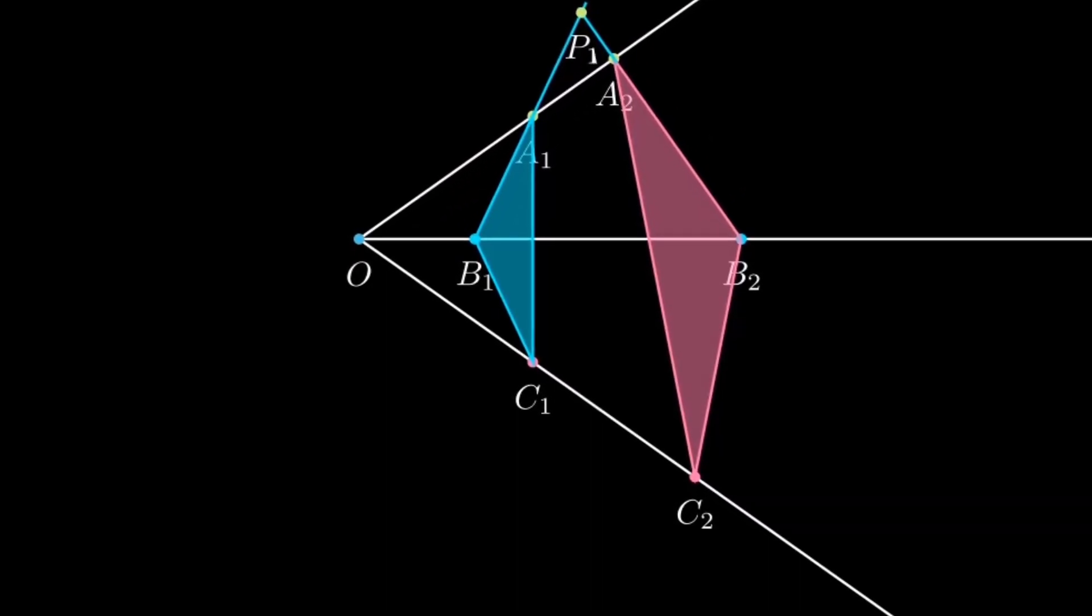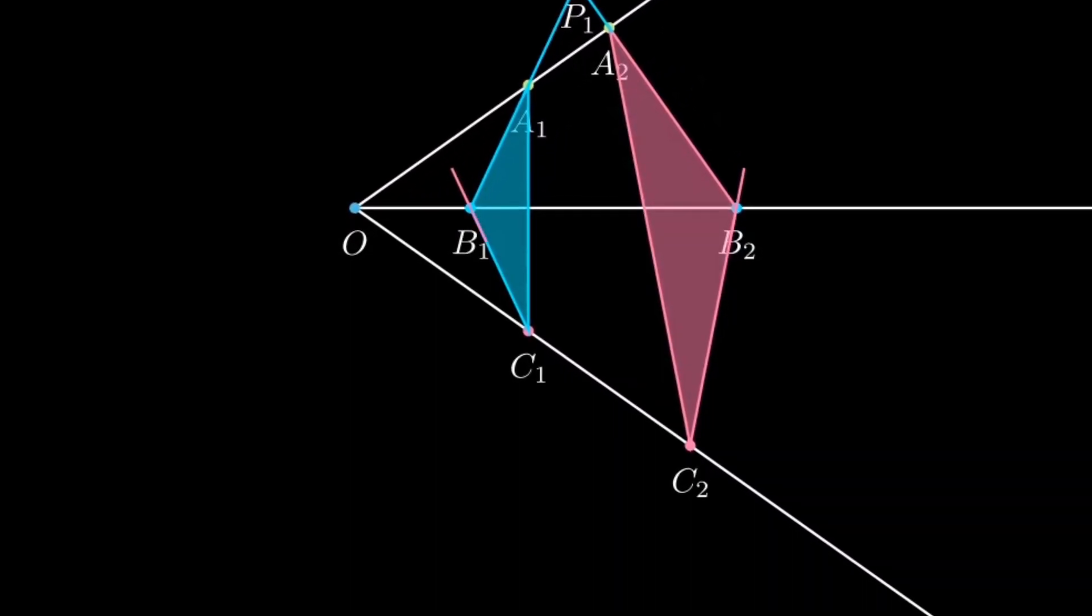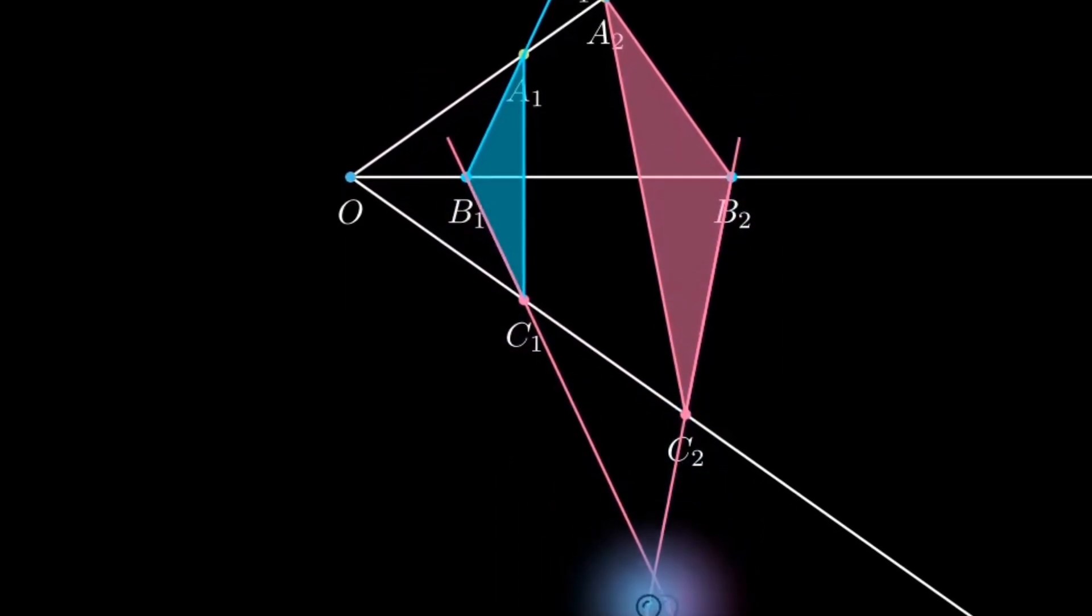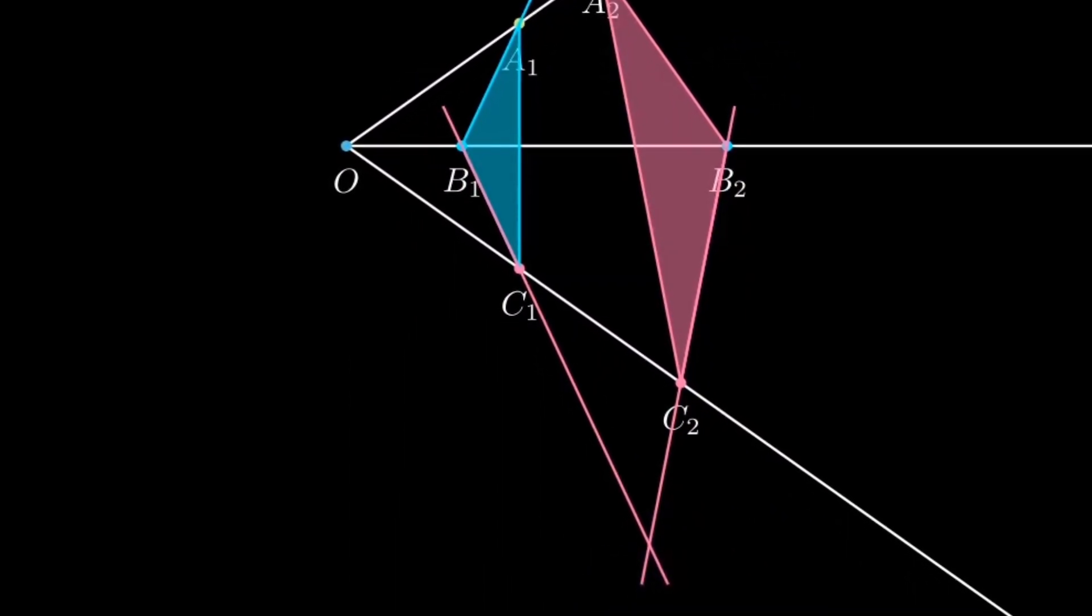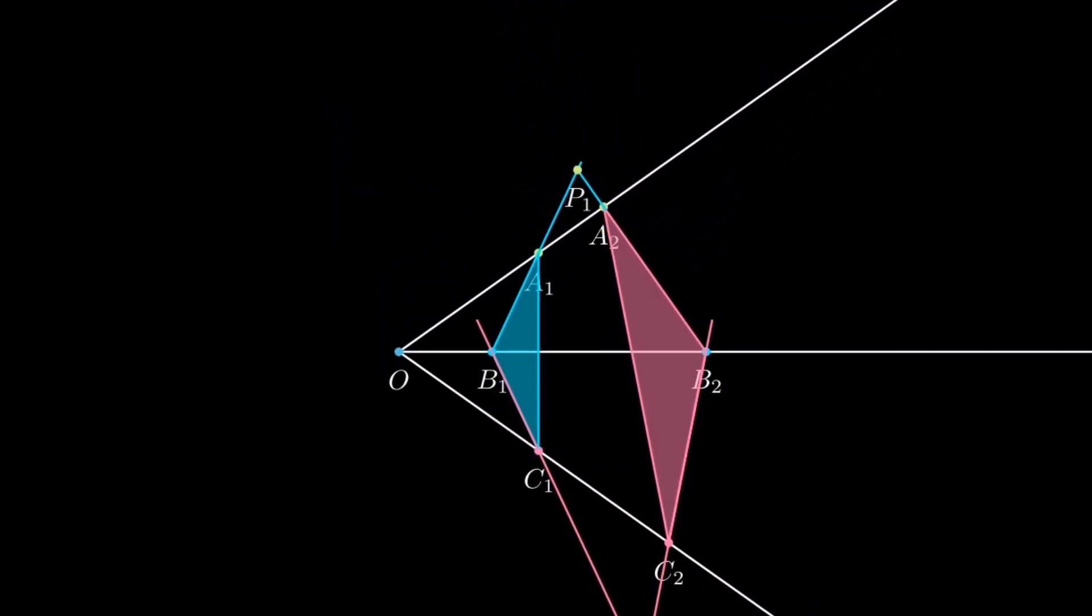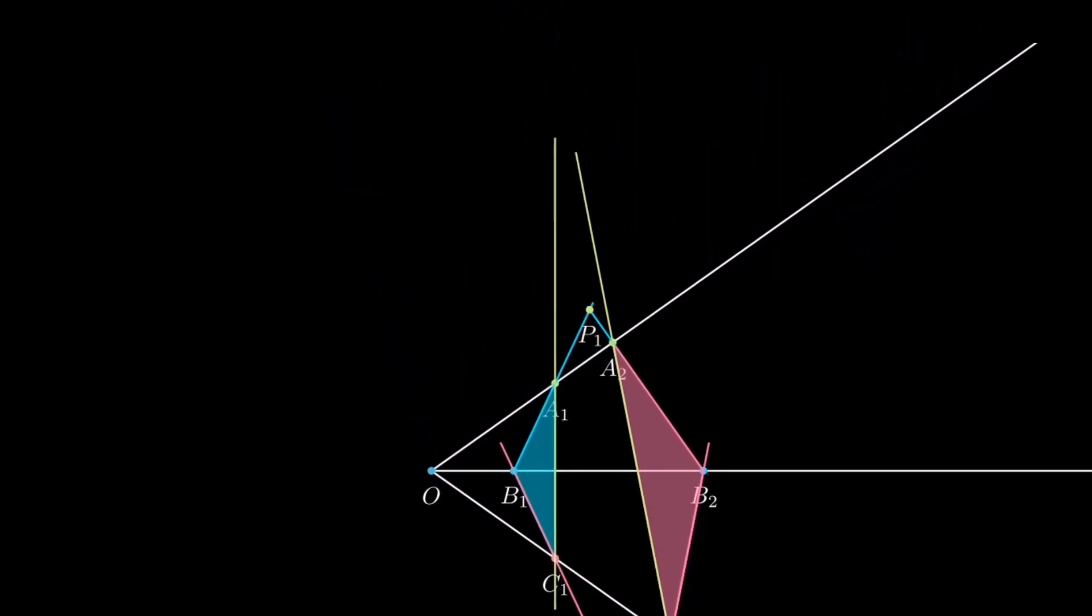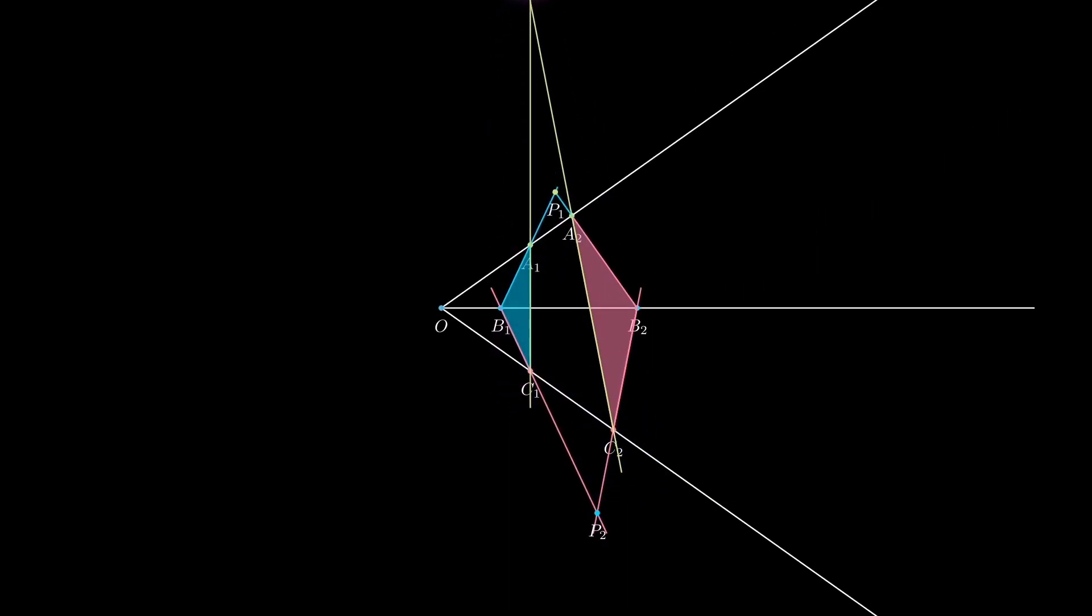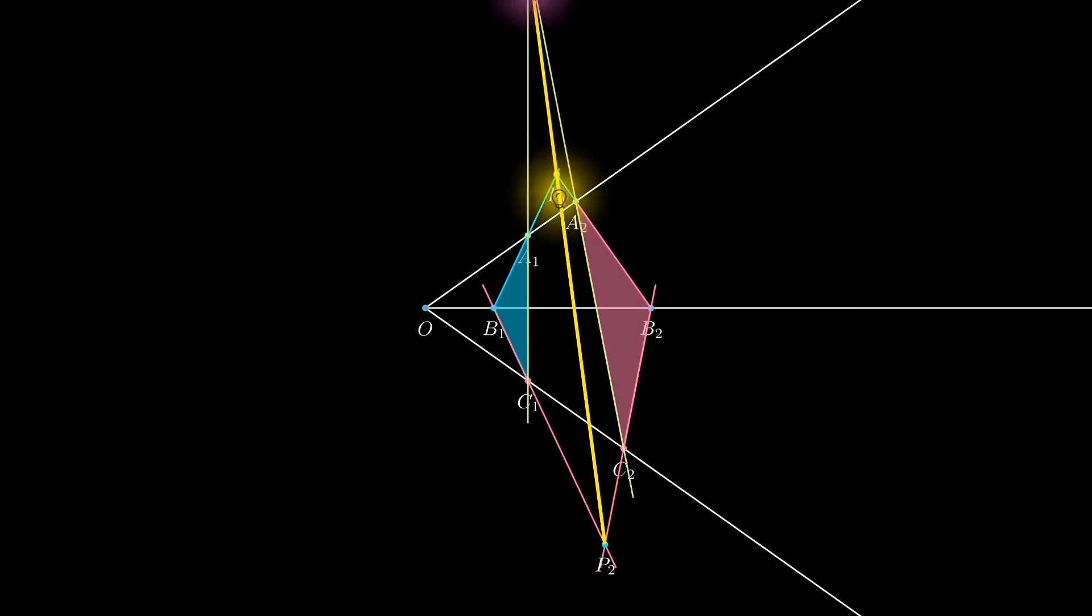So let's do one thing. Let's join B1, A1 and B2, A2. And B1, C1 and B2, C2. And finally, C1, A1 and C2, A2. So we have three points, P1, P2, P3, which are the intersection points. And there you go. You have the line of perspectivity.